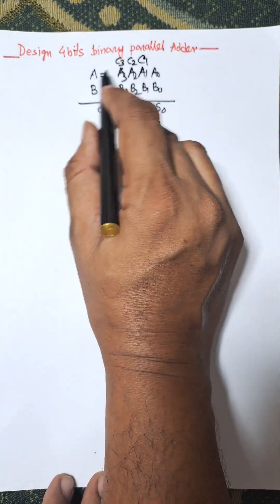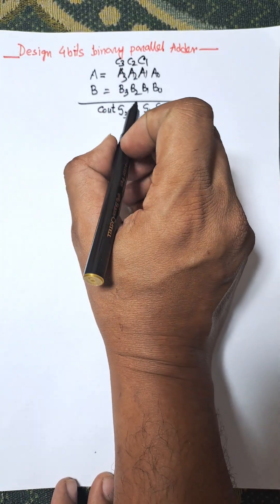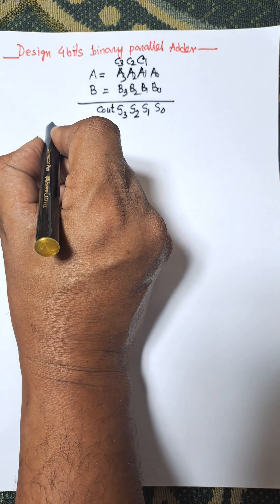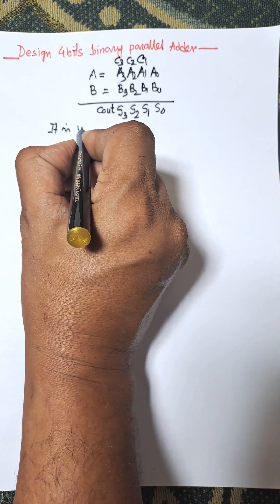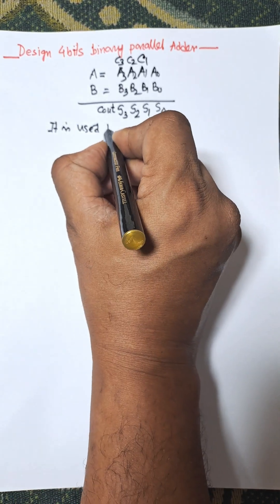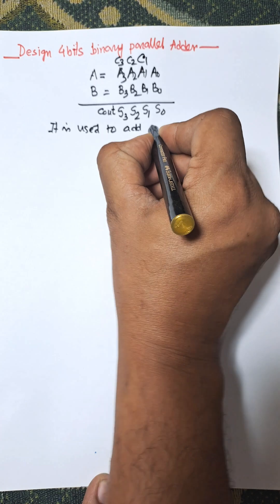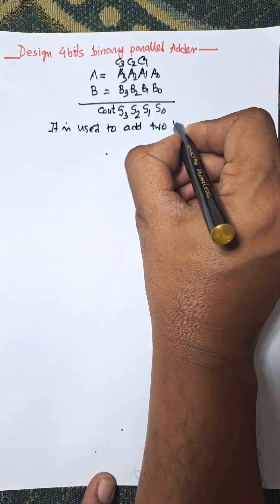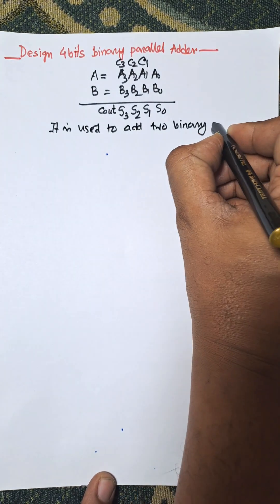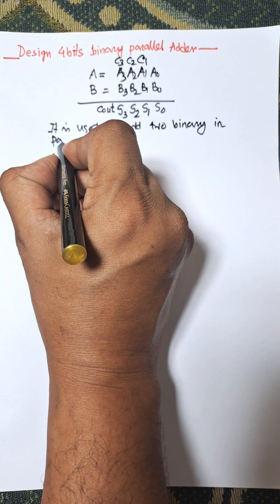These are the actual calculations using 4-bit binary parallel adder. It is used to add two binary numbers in parallel form.